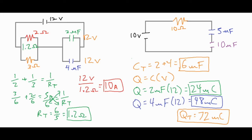That sums everything up for the first circuit. To recap: the capacitors initially act as a short, allowing current through the resistors. Since they're wired in parallel, we add up the inverses and cross-multiply to find the total resistance of 1.2 ohms, giving an initial current of 10 amps. That 10 amps decays to zero as the capacitors charge up. Total capacitance is the direct sum — six microfarads — and each capacitor sees 12 volts, so we use Q = CV to find the individual and total charges.